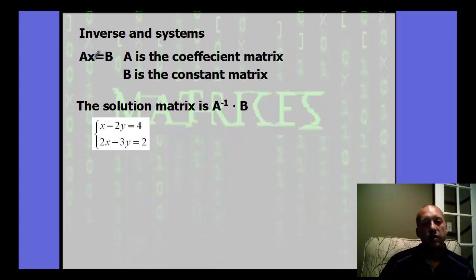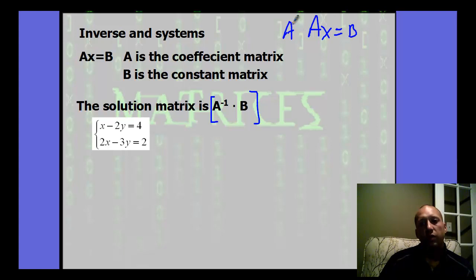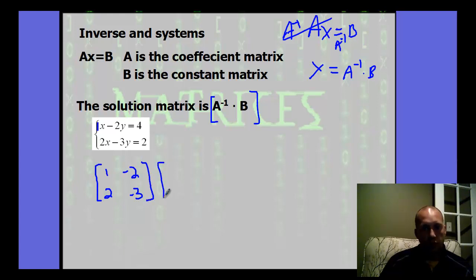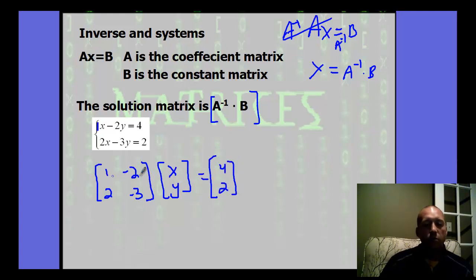So for solving systems using inverses, we again have AX = B. A is the coefficient matrix, B is the constant matrix, and the solution is found by A inverse times B. If you have a system, the first thing you do is write it in matrix form. The coefficient matrix is the coefficients of the variables: 1, negative 2, 2, negative 3. Multiply that by the variable matrix [x, y], and that equals the constant matrix [4, 2]. If you multiply those two matrices together, you go right back to the original system — they are equivalent ways of writing it.